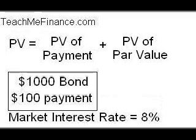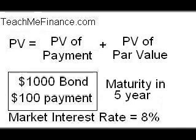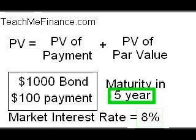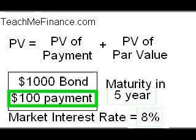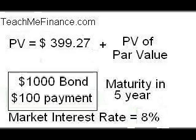Let's do an example. Say you have a bond with a par value of $1,000 and the maturity date is in five years. The annual coupon payments are $100, which is 10%, and the market interest rate is 8% — in other words, the market interest rate has dropped from 10% to 8% since the bond was issued. For the present value of the annuity, use 8% for the interest rate, 5 for the number of compounding periods, and $100 for the payment. You'll find that the present value of the coupon payments is $399.27.